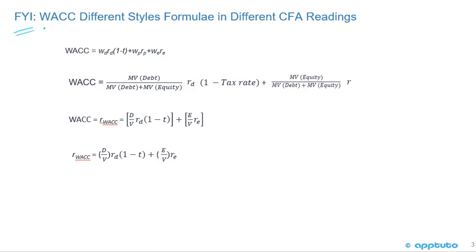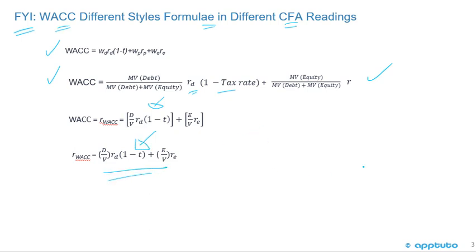There are different weighted average cost of capital formula styles in different CFA readings. This is the one in this reading, but I've seen it presented in other ways in other readings — all calculating the exact same thing, just different nomenclature. For example, you can write market value of debt divided by market value of debt plus equity, times cost of debt times one minus tax rate, plus market value of equity over market value of debt plus equity. It's the same formula, just different bracket placement and notation. This can be confusing for first-time CFA students, so I just wanted to point that out.